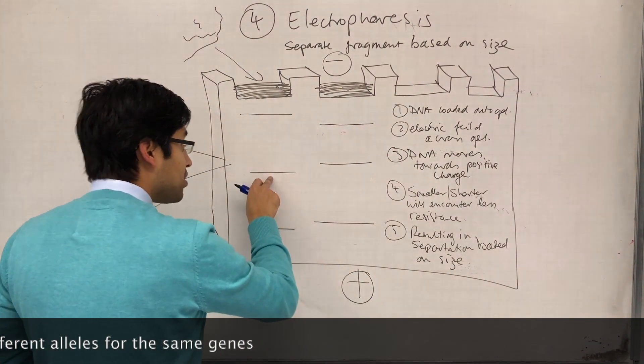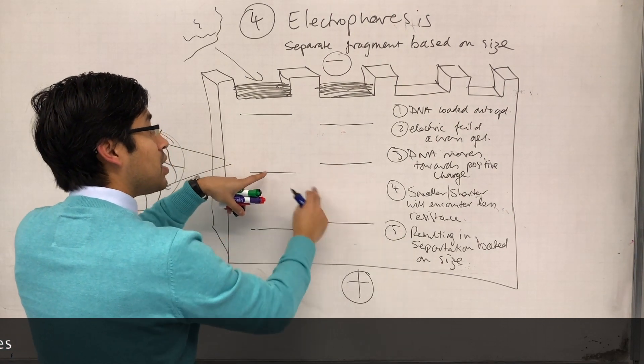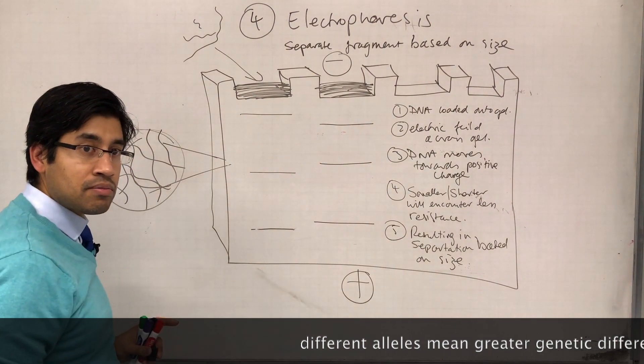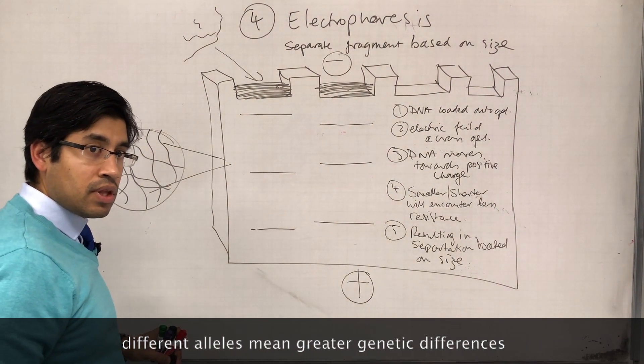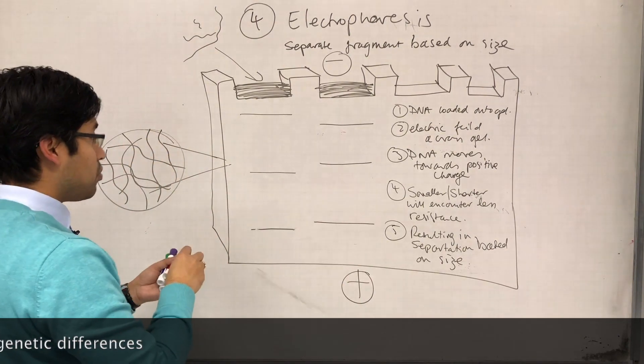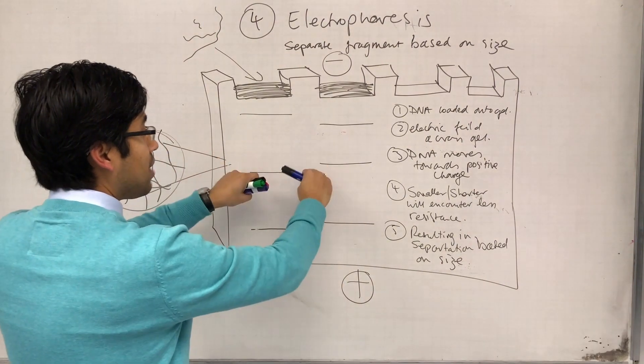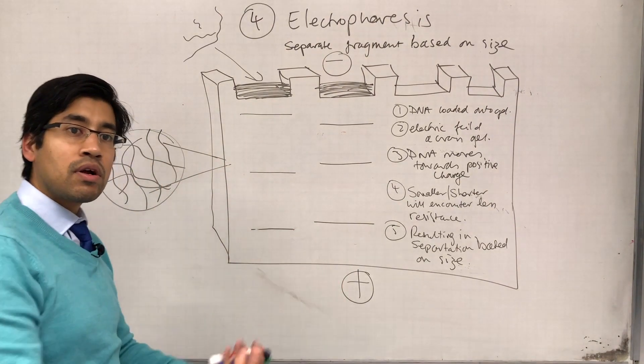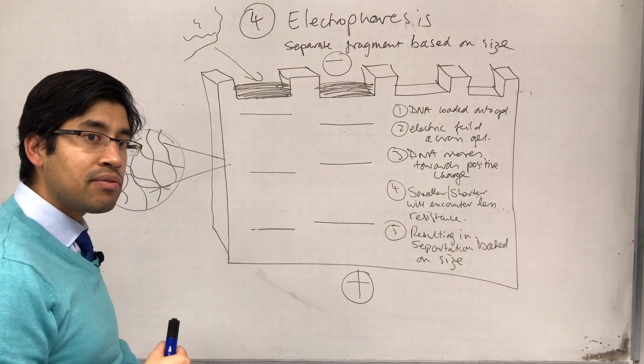And at this position, they have a longer fragment, so at a different position, this person has got more STR repeats than this person. And that is DNA profiling. And based on how similar these bands are in terms of the position of the gel, we start to infer whether they are closely related or distantly related.